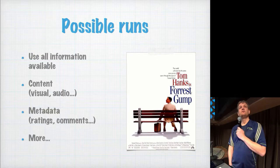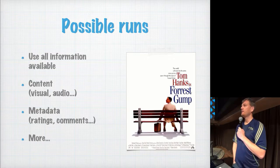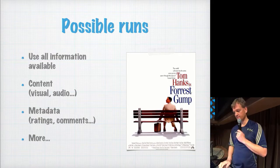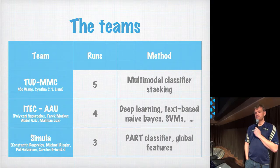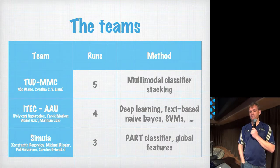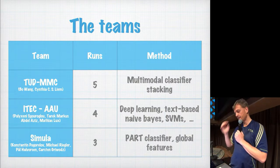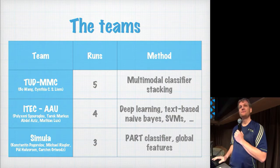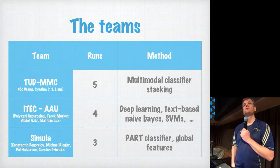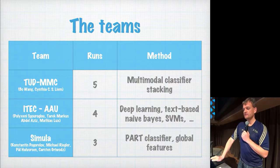You could use whatever you wanted in the runs that the participants provided — all the useful information or just some of it. We saw a lot of different combinations: some used content only, some used metadata only, and we had variations and combinations. We had three participating teams — one from TU Delft, one from Austria, and one from Simula. The Delft participants used a multimodal classifier stacking approach with pretty good results. The Austrian team used deep learning, text-based approaches, and different combinations of the available data. Konstantin and Michail at Simula tried three different runs using global features and a classifier tree.